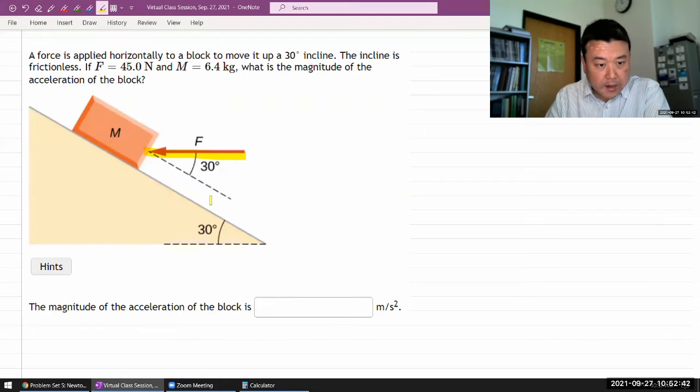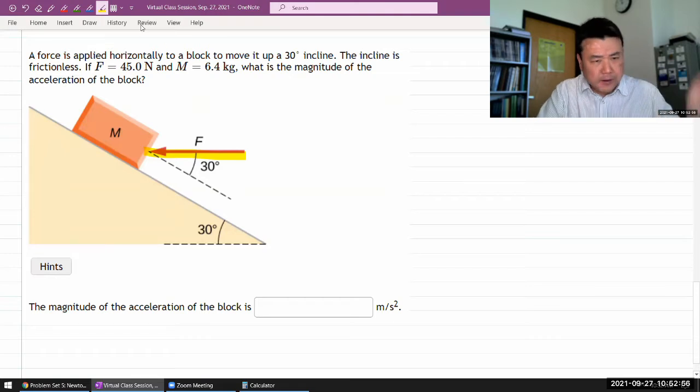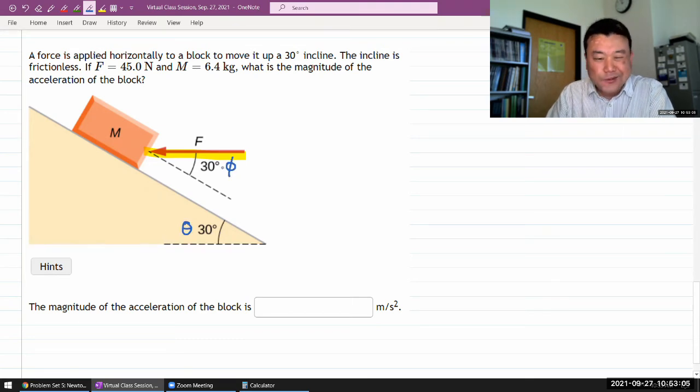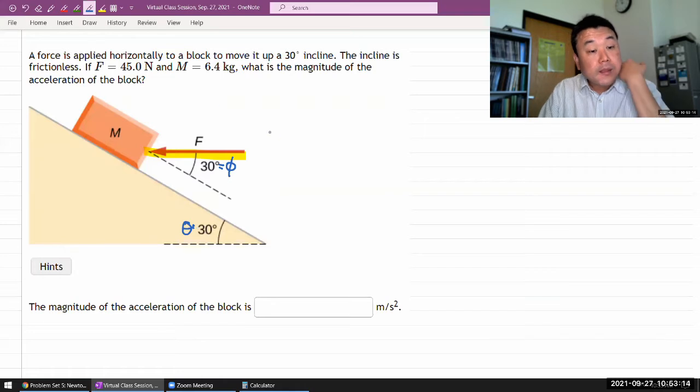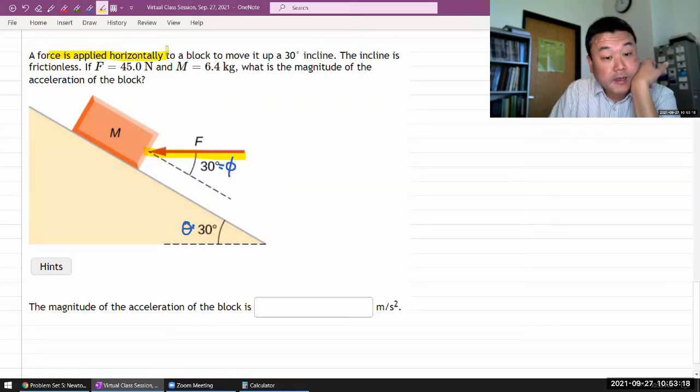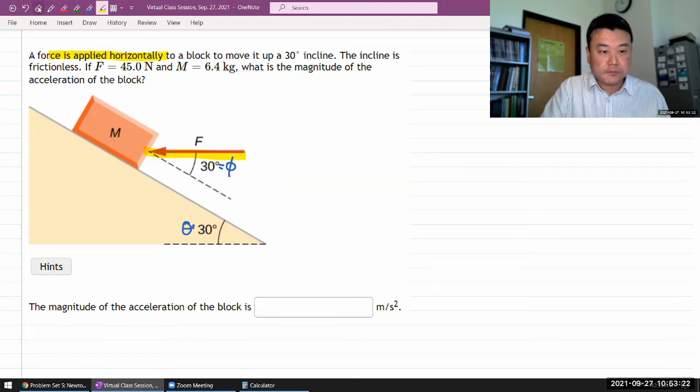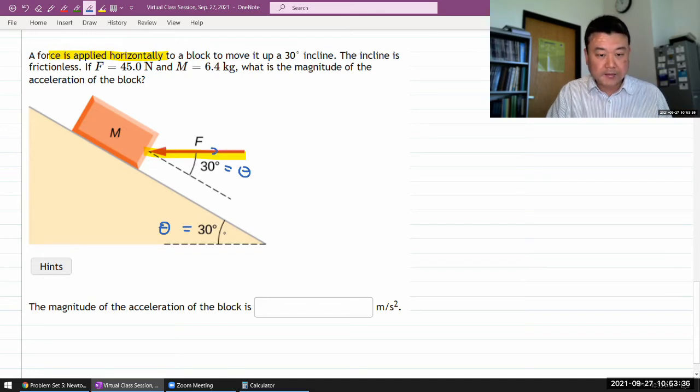Let me label the angles. For purpose of good problem solving hygiene, let me label these angles as theta and phi, even though they are numerically equal in this particular case. Actually, if I'm applying the force horizontally, then they do have to be the same angle. So let me label them both theta. Because once they say you're applying the force horizontally, these are parallel lines. There are theorems in geometry that says that these two angles should be the same.